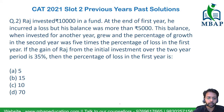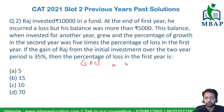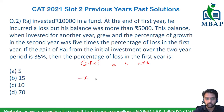This question is from the topic of percentages, and the application is a module of successive percentage changes, where multiple changes happen together — given by: change of a plus change of b plus change on change. If the loss is x% in the first year, then next year he is incurring a profit of 5x%.